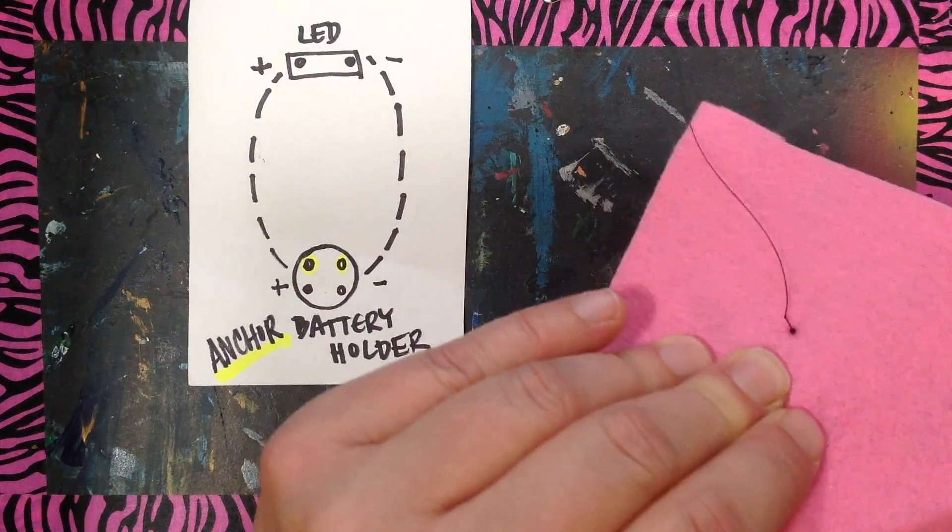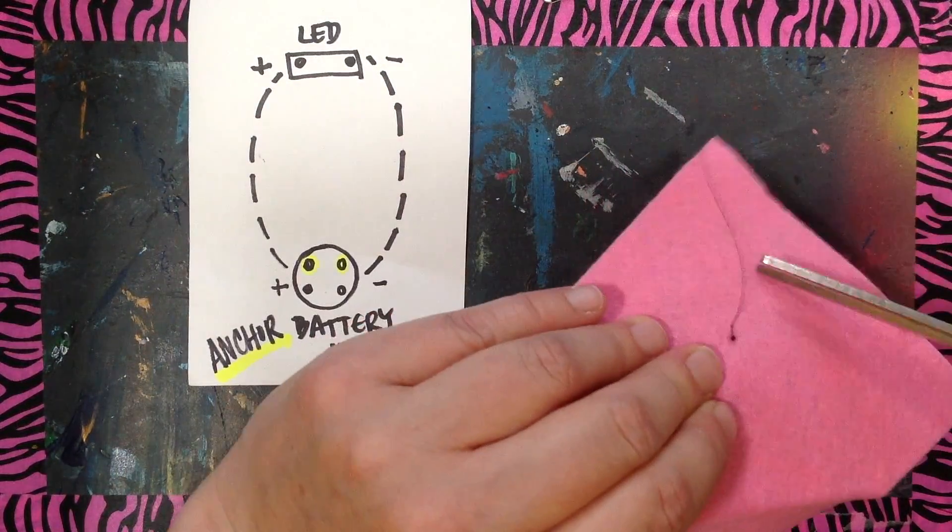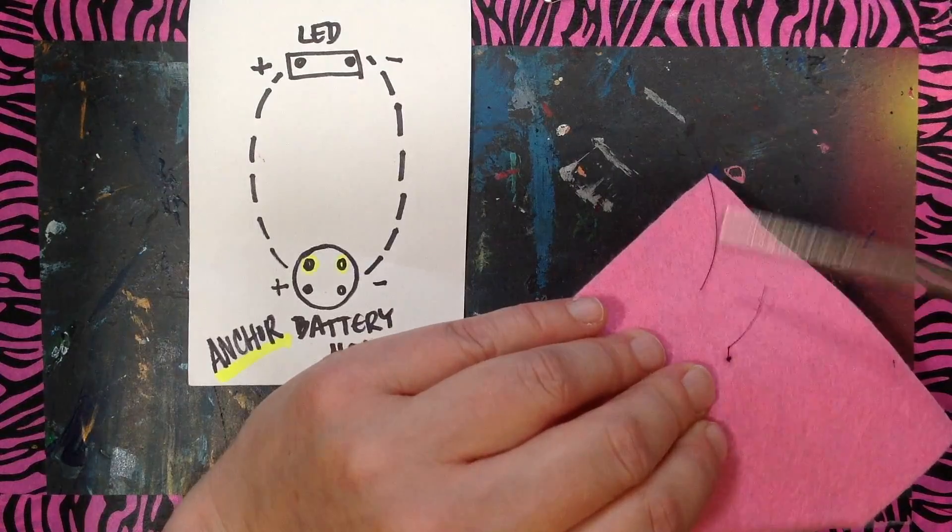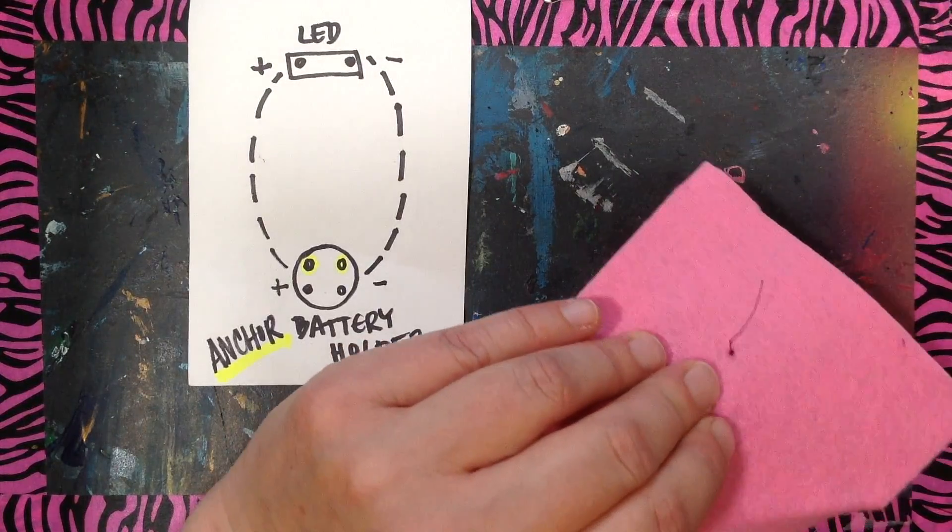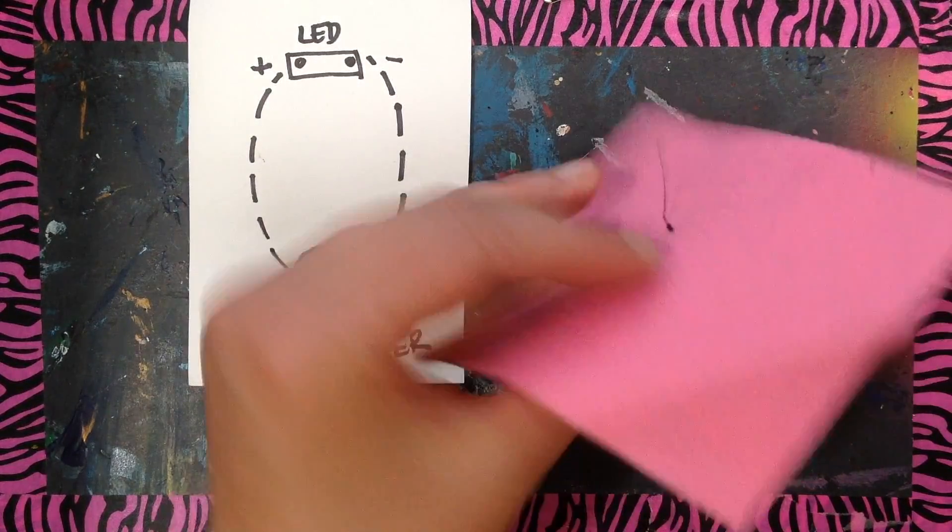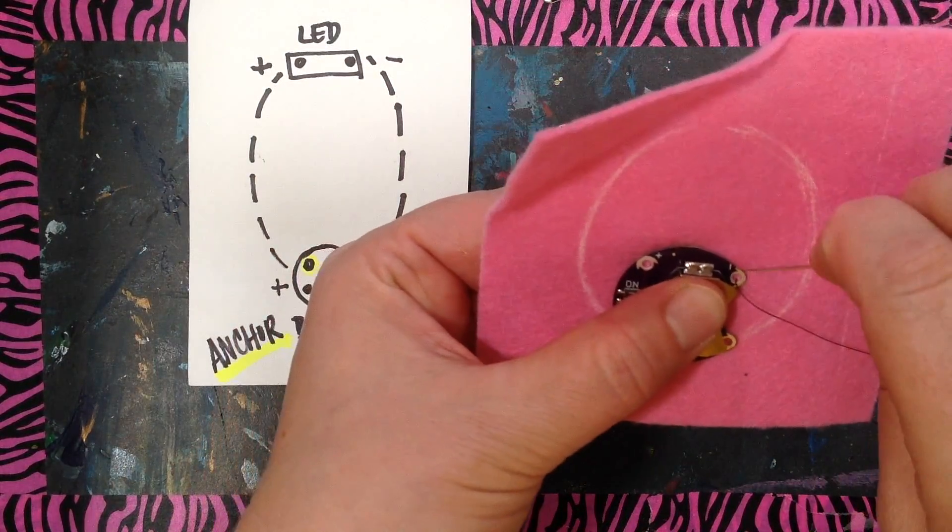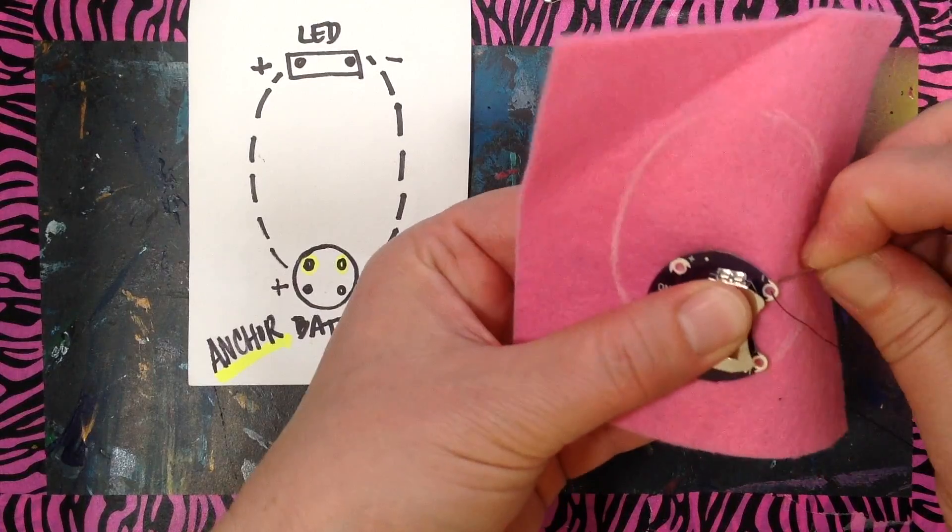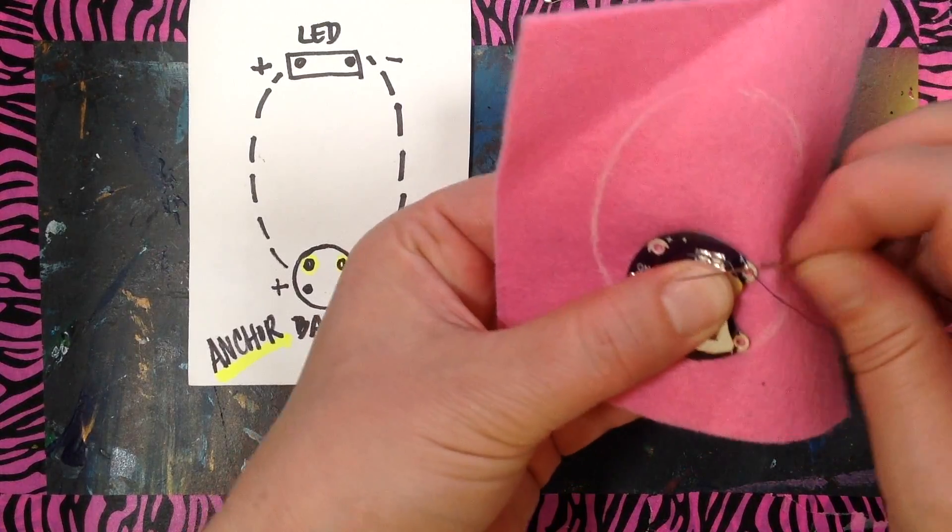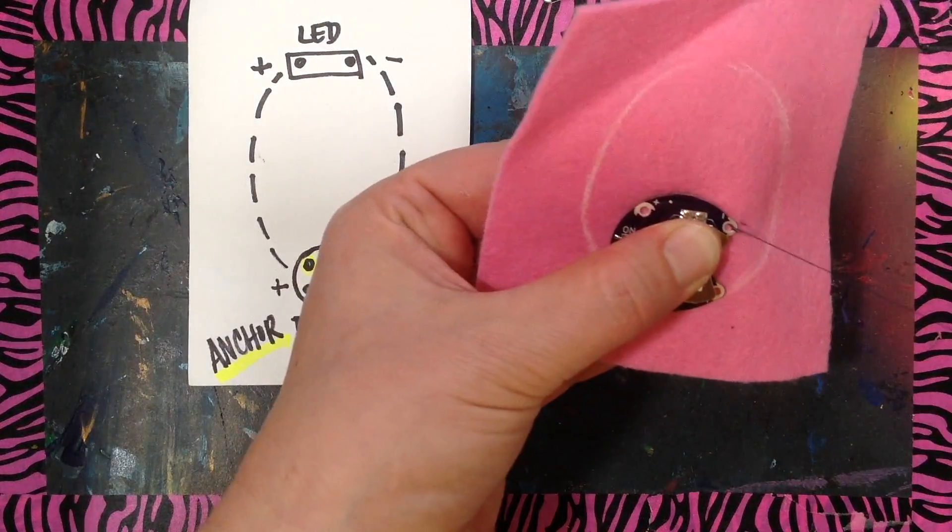You can trim this tail a little bit. You don't want to trim it all the way, but maybe just about an inch left. And then what you're going to do is whip stitch around that metal part.